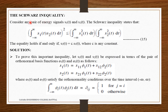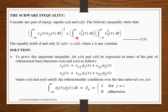The Schwarz inequality: we need to prove the condition with its proof. Consider any pair of energy signals S1 and S2. The Schwarz inequality states that the integration from minus infinity to plus infinity of S1(t) times S2(t) dt, the whole square, is less than or equal to the integration of S1(t) squared dt multiplied with the integration of S2(t) squared dt. This is equation 15.